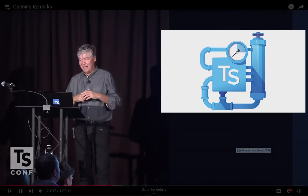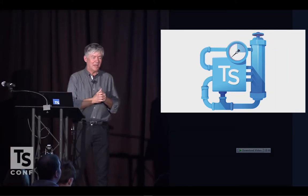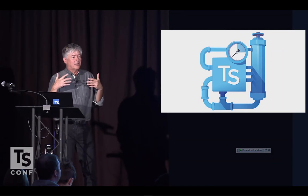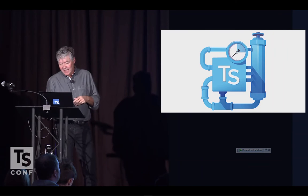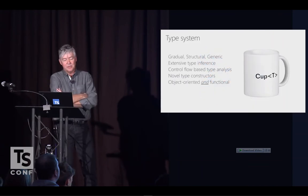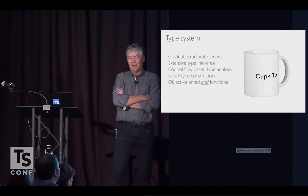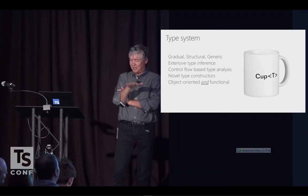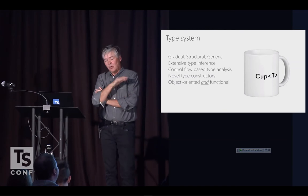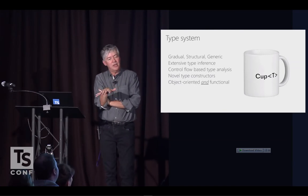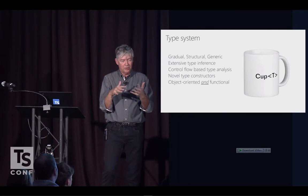Let's talk about how the sausage gets made — what's the engine of TypeScript. At the core of it all is a type system, and TypeScript has a very interesting type system, unlike anything I've seen. Over time it's gotten more and more esoteric. It's a gradual, structural, and generic type system, and it's really rare to see all of those combined.